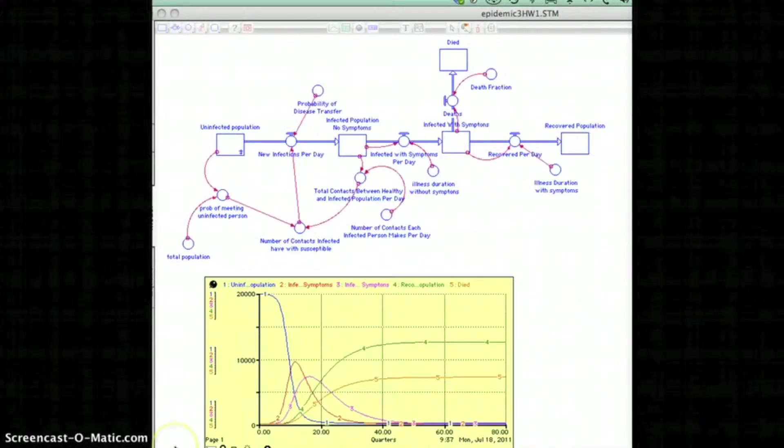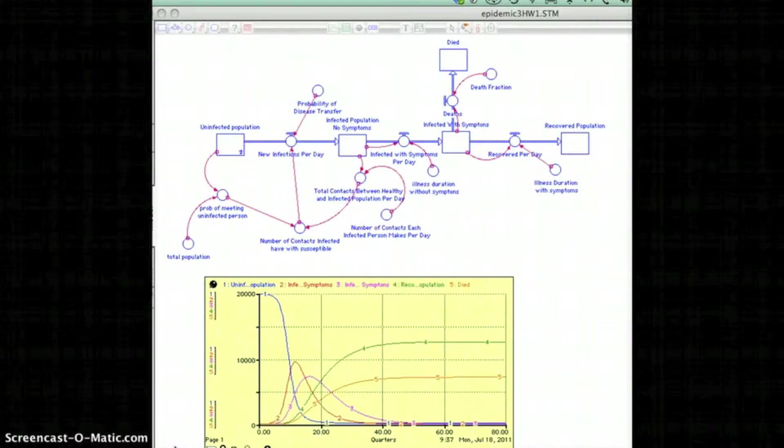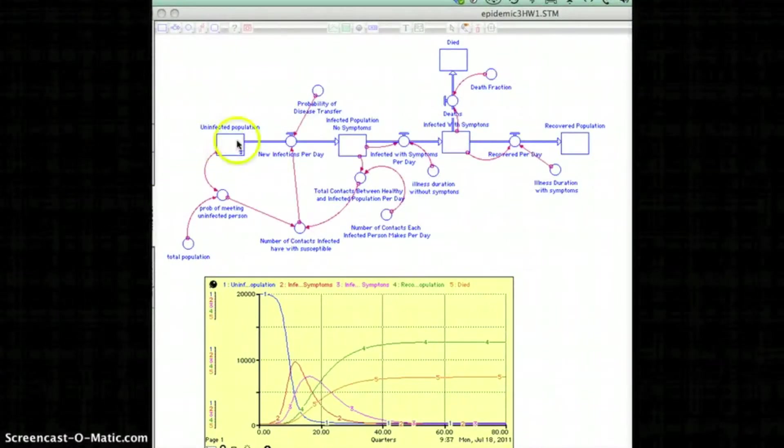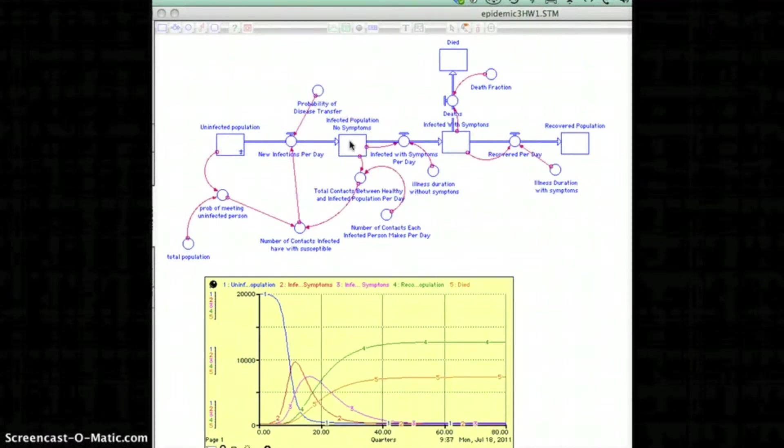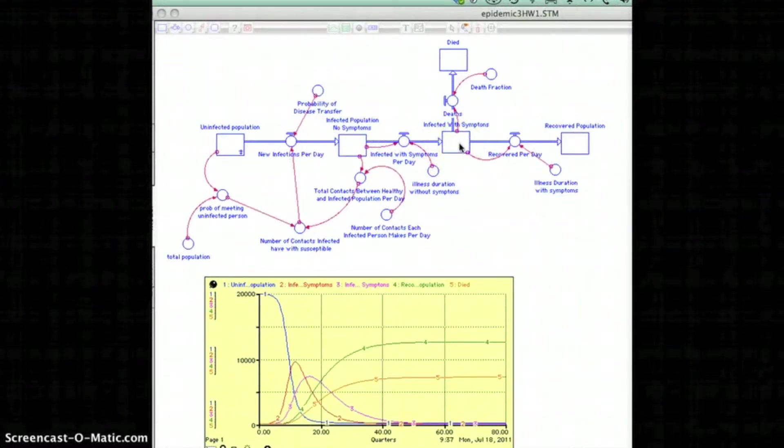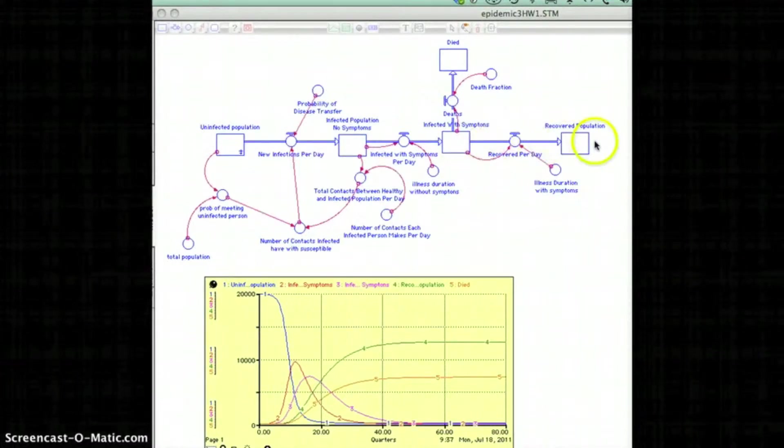So here's a more complicated model. This is a model of an epidemic. Notice shown here is an uninfected population, this is an infected population with no symptoms, this is an infected population with symptoms, this is a recovered population, and then this is a population that died. They're also shown on the graph here.